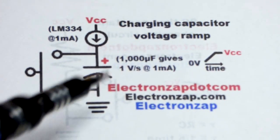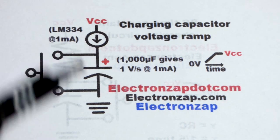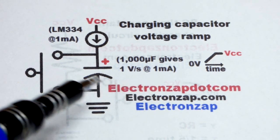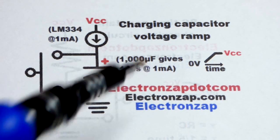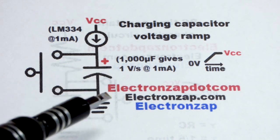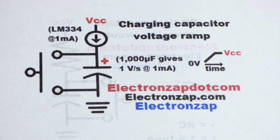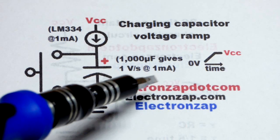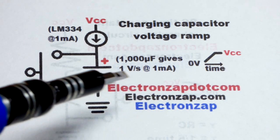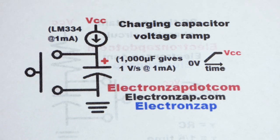So when it comes to a 1 milliamp current and a 1000 microfarad, which is the same as a millifarad, you will get 1 volt per second, right there. So if you did 0.1 microamps, it would take 10 seconds to change 1 volt.